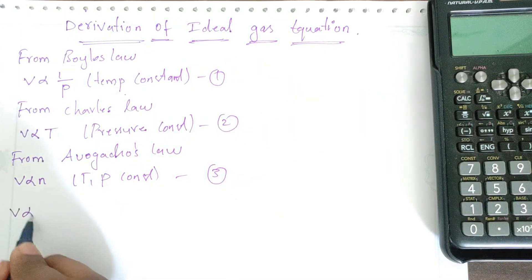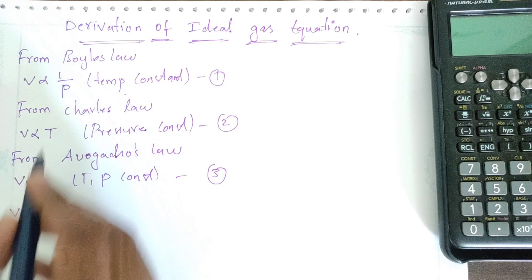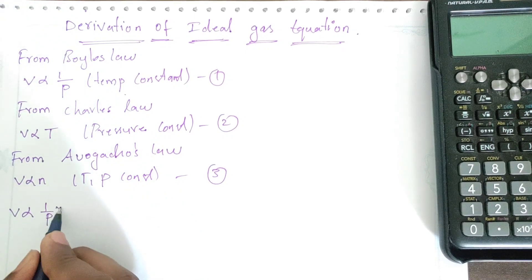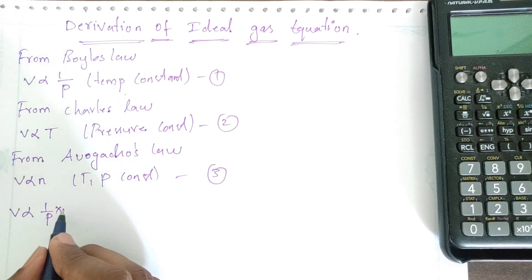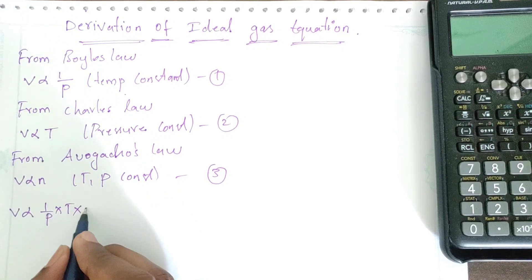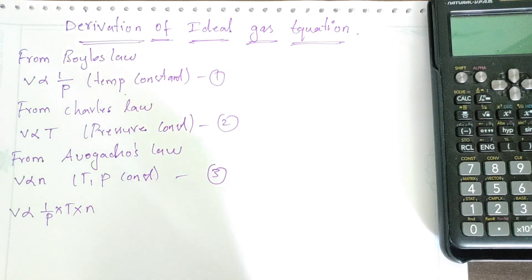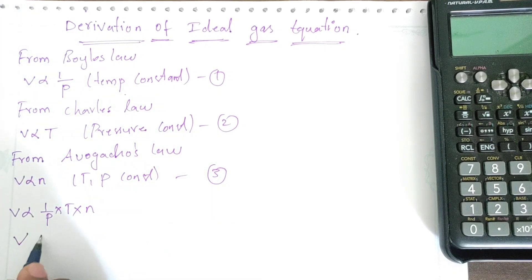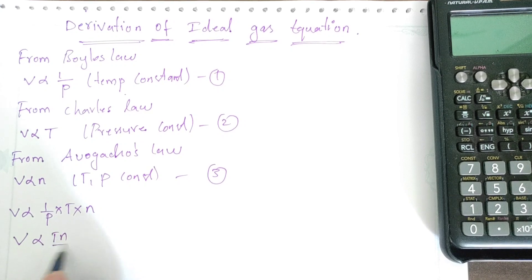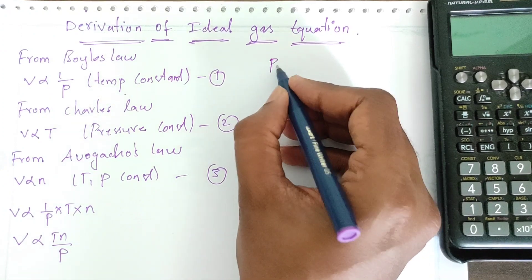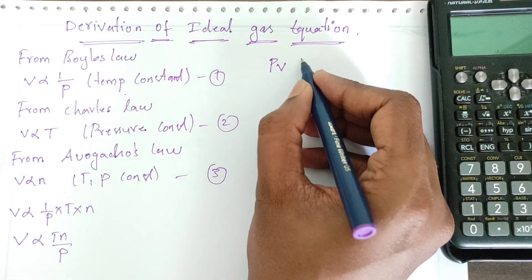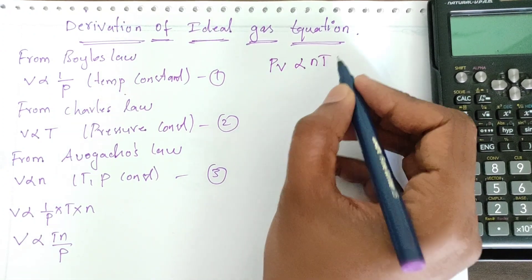Combining all three laws, we get V ∝ (1/P) × T × N, which can be written as V ∝ TN/P. Taking P to the other side gives PV ∝ NT.